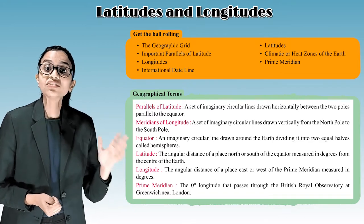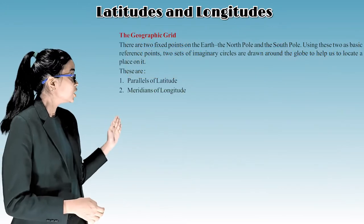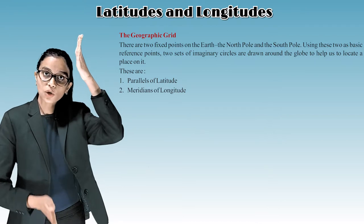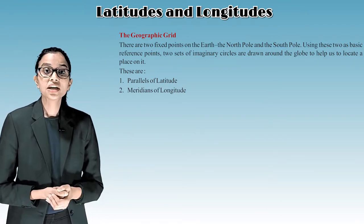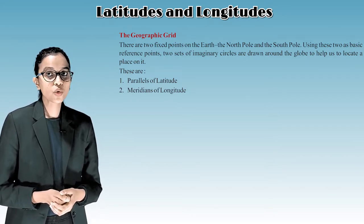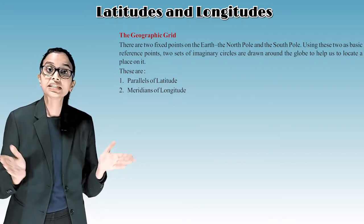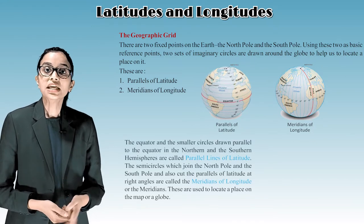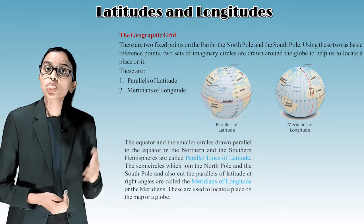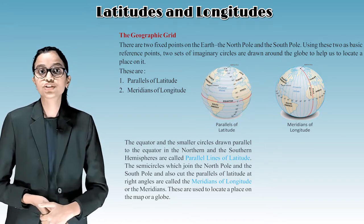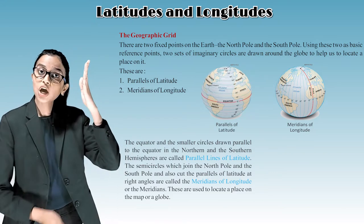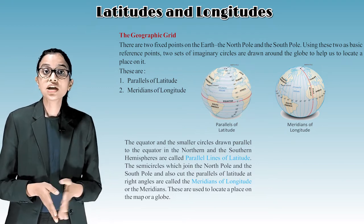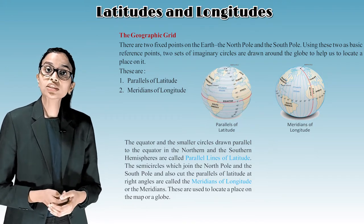The geographical grid: There are two fixed points on the earth — the North Pole and the South Pole. Using these as basic reference points, two sets of imaginary circles are drawn around the globe to help us locate a place on it. These are parallels of latitude and meridians of longitude. The equator and the smaller circles drawn parallel to it in the northern and southern hemispheres are called parallel lines of latitude. The semicircles which join the North Pole to the South Pole and cut the parallels of latitude at right angles are called meridians of longitude. These are used to locate a place on the map or a globe.